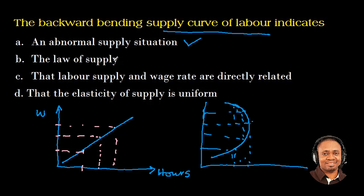It is not option B which says the law of supply. It is not option C which says that labour supply and wage rates are directly related — when it is on the normal curve or normal slope, this applies, but once the curve starts bending backward, this does not apply; the labour supply, that is the work time, is not directly proportional to the wage rate. And lastly, option D — that the elasticity of supply is uniform — that is not the case with the backward bending supply curve of labour.